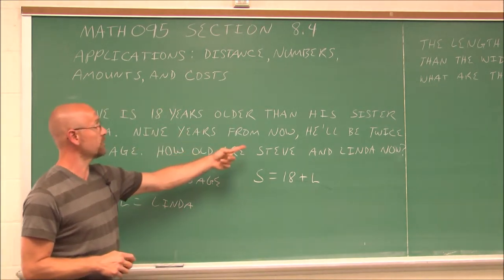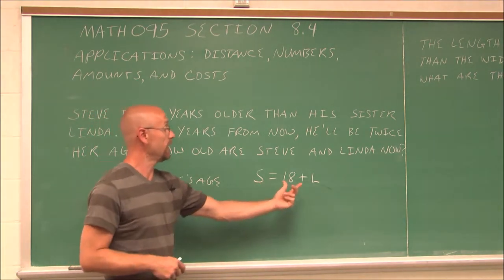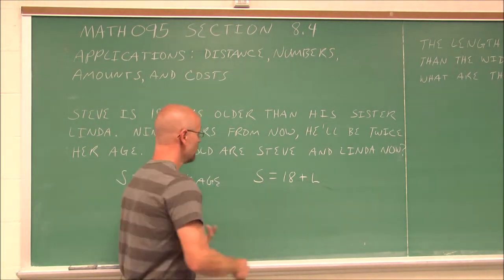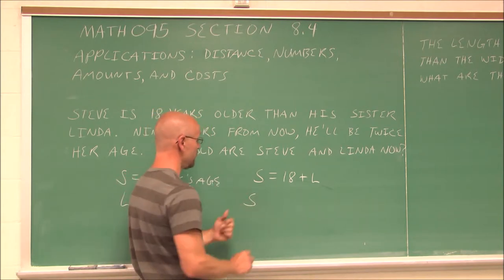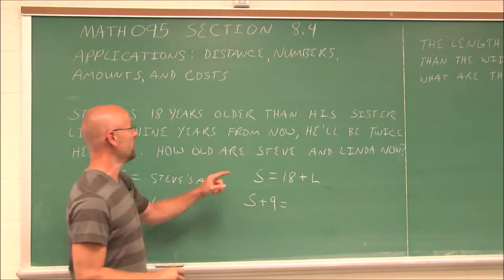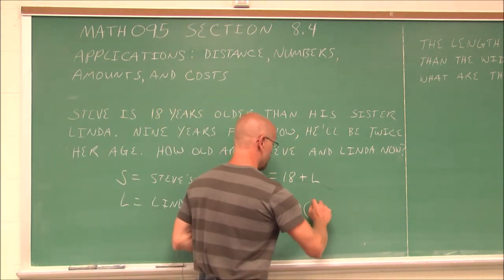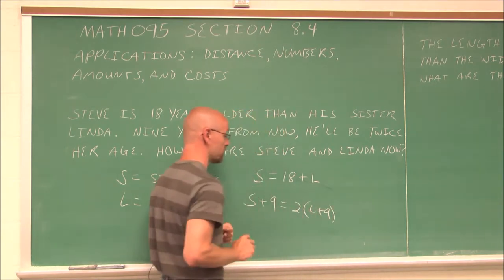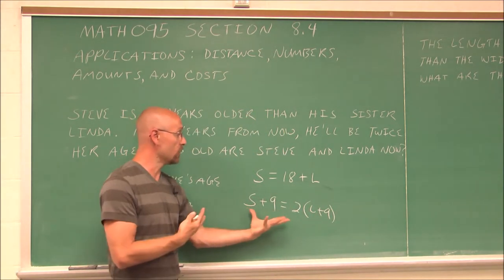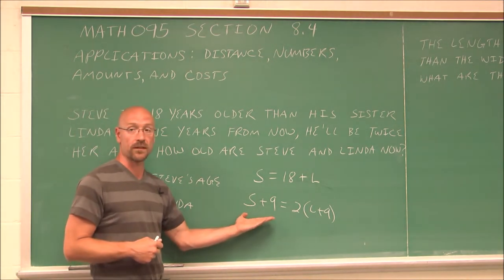And then it says nine years from now. So in nine years, Steve will be nine years older, and Linda will be nine years older. So let's write that. Steve, in nine years, will be twice his sister's age. So twice Linda's age, nine years from now. So we've essentially just translated the equation, and now we're ready to solve this system.